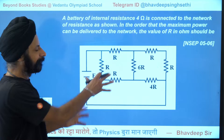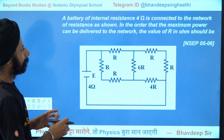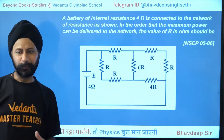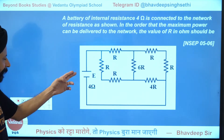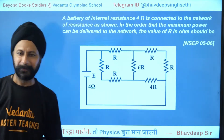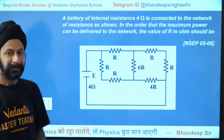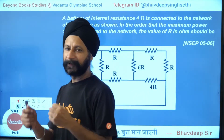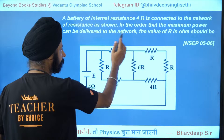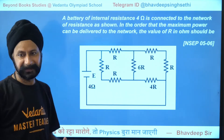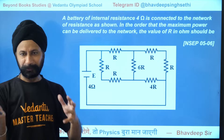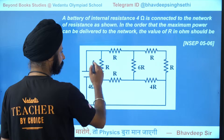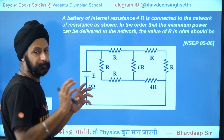The question asks: what is the value of R so that you have the maximum power output? This is a battery E with an internal resistance of 4 ohms. If you have been following my sessions, you know the maximum power is delivered when the external resistance equals the internal resistance.